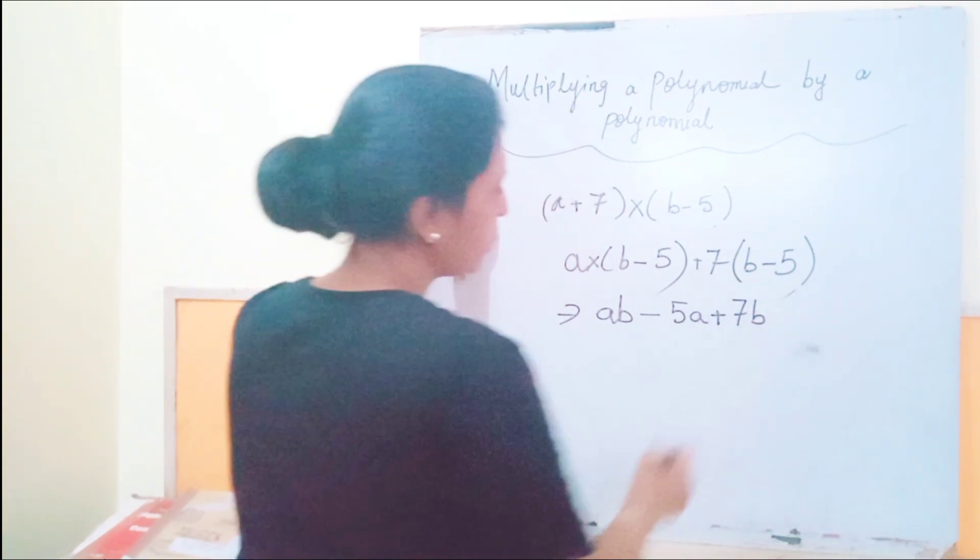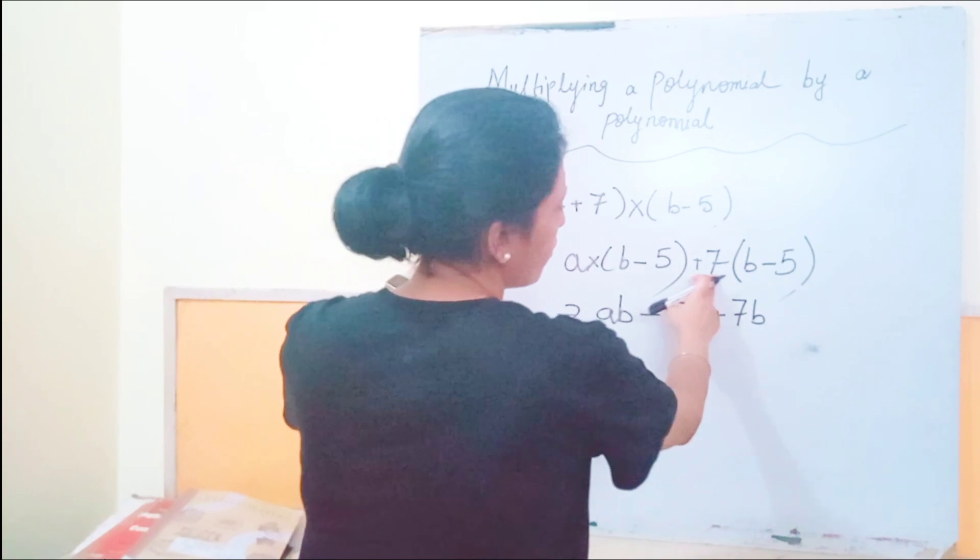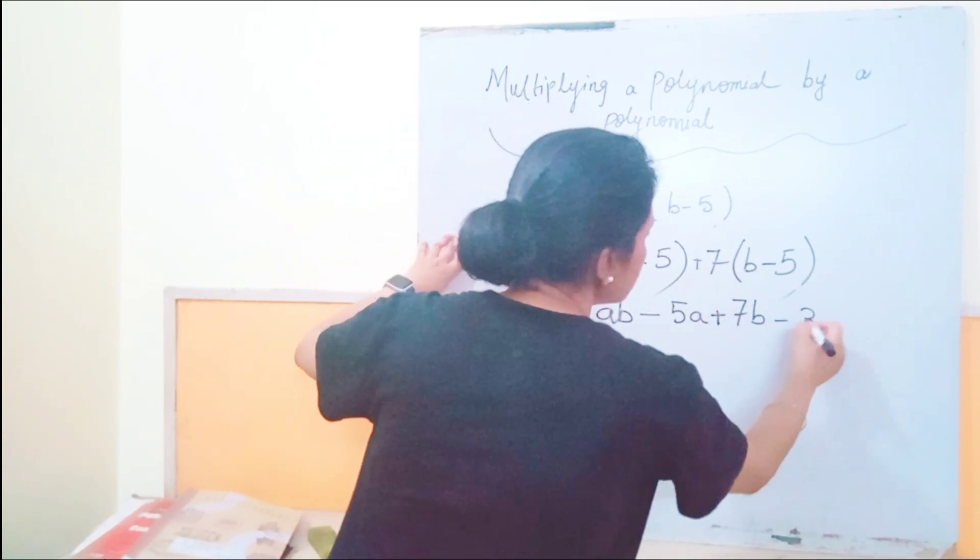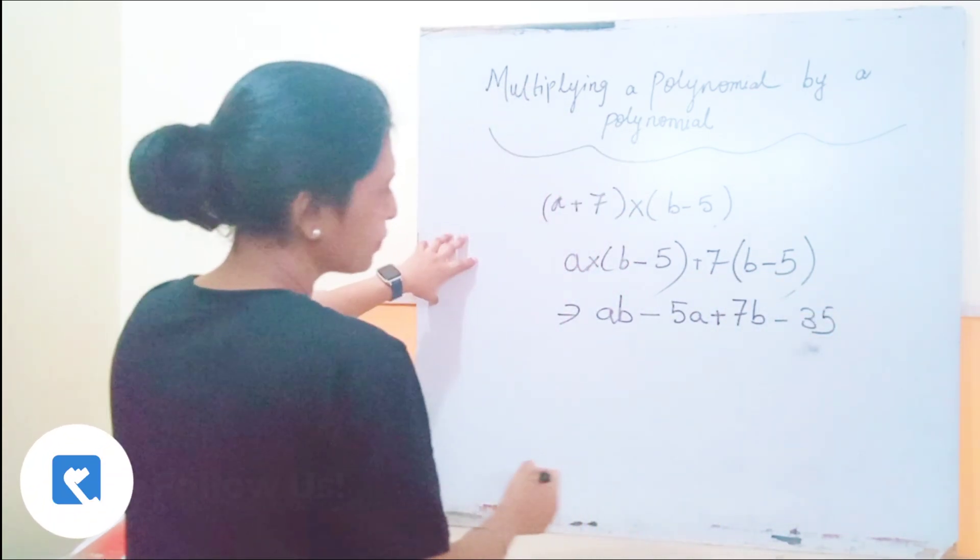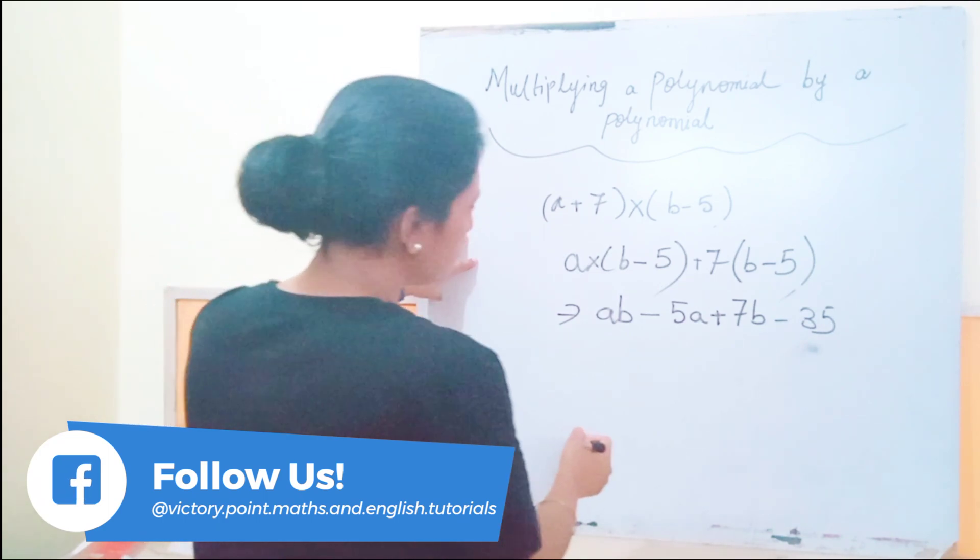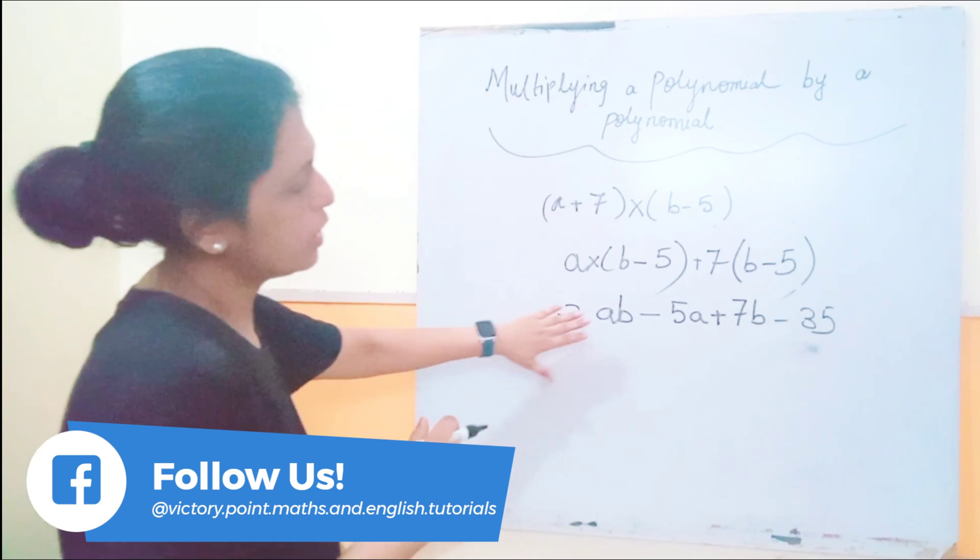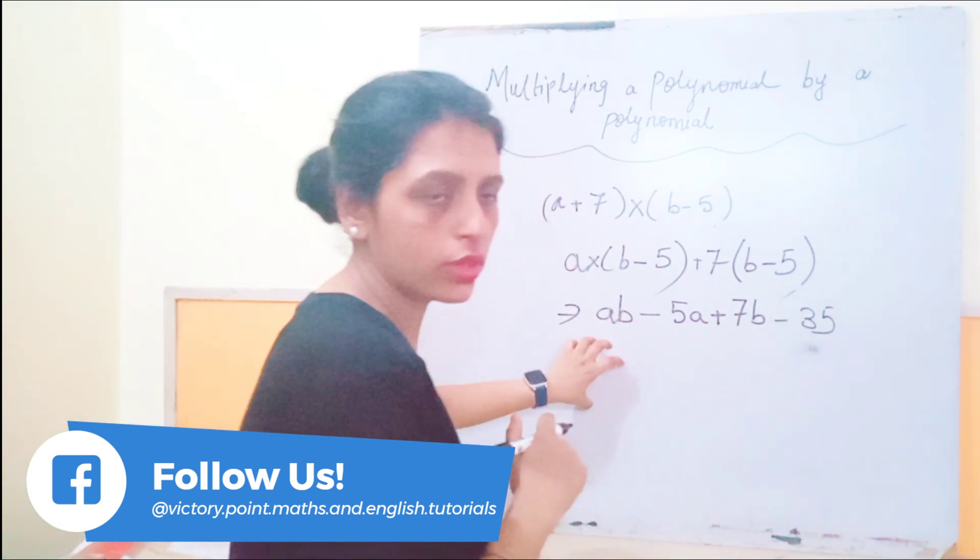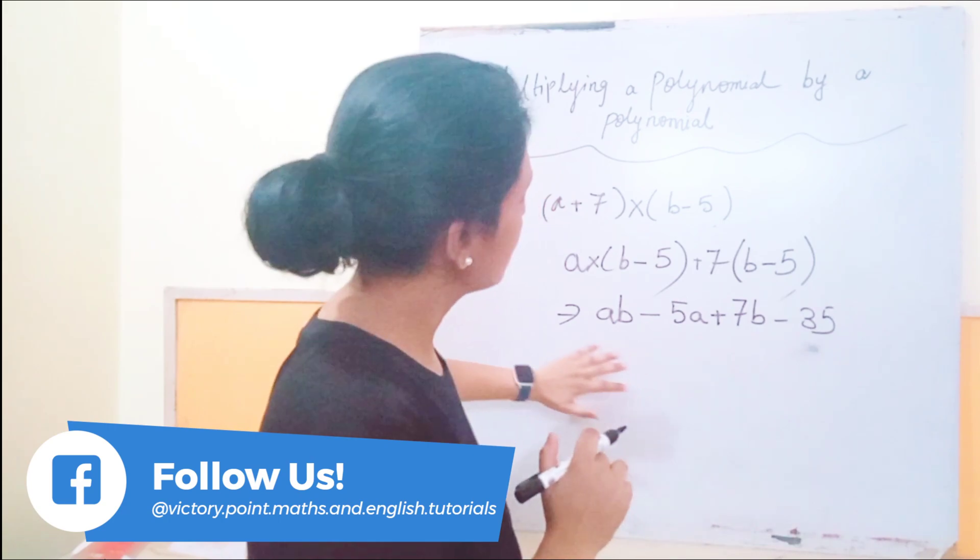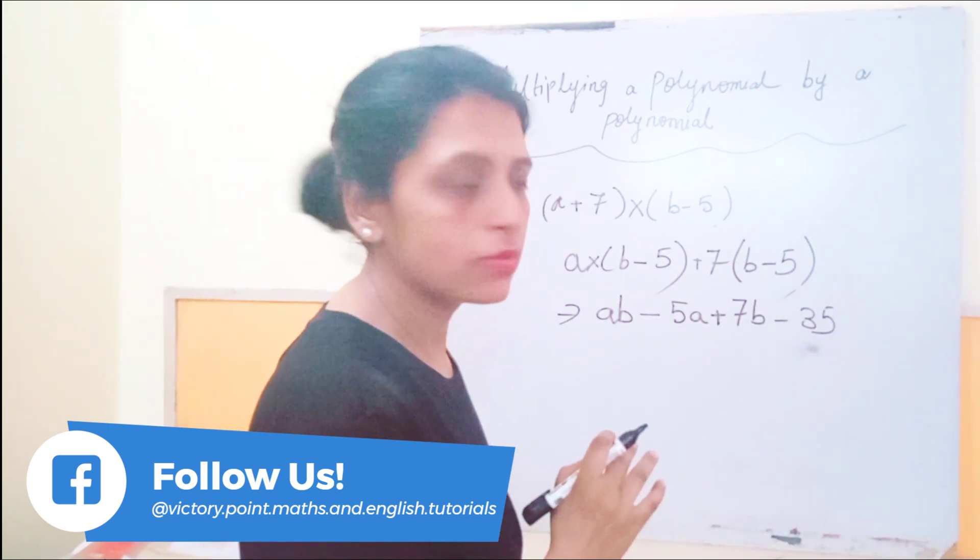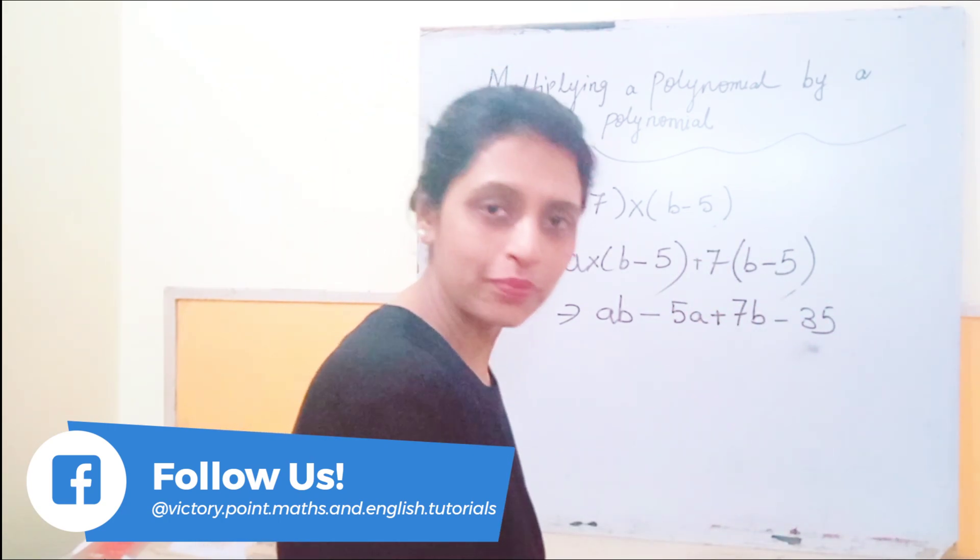7b. 7 into minus 5 will be minus 35. Okay, now what we are going to do? We will see if any like terms are there. If there are like terms, then we will put them together. And if there are no like terms, we can make it as it is.